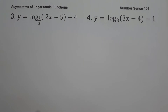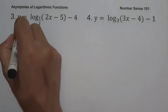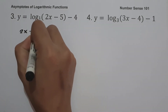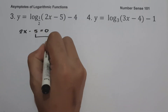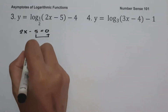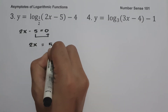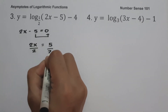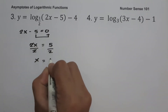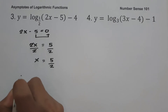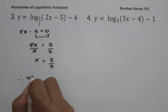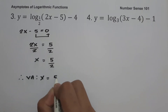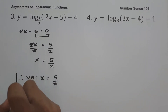On example number three: y equals log base 1/2 of (2x minus 5), minus 4. To find the vertical asymptote, let us equate the argument equal to zero. So we have 2x minus 5 equal to zero. Moving negative 5 to the other side gives us 2x equals 5. Dividing both sides by 2, we get x equals 5 over 2. Therefore, our vertical asymptote is x equals 5/2, and this will be our answer.